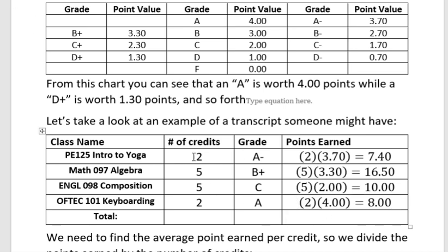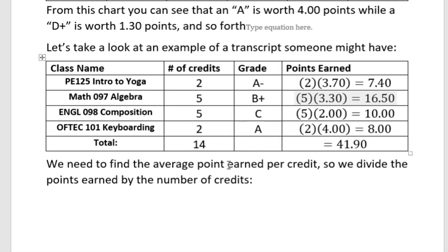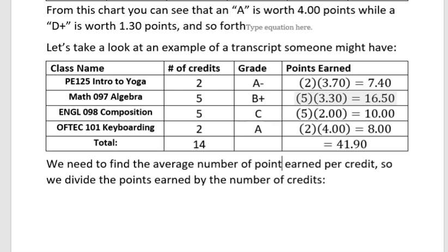Now what I want to do is add up the number of credits they attempted for the quarter. The total number of credits attempted was 14. And I want to add up the points: 7.40, 16.50, 10.00, and 8.00. When I add those together I get 41.90. So I figured out the points for each class, then added up the total points earned and the total number of credits.